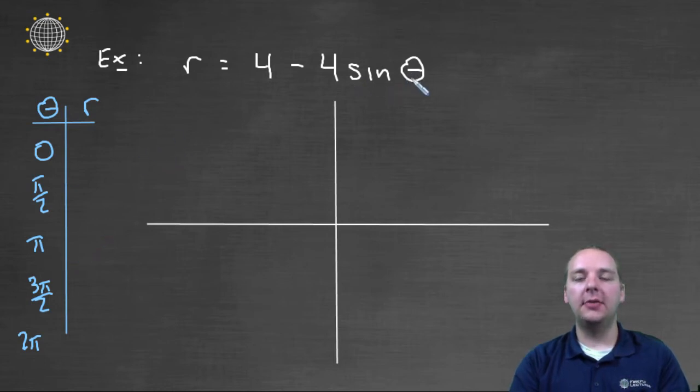So if theta was zero, then sine of zero is zero, and four minus zero is four. And let's go ahead and finish up the table, and then we'll talk about how to graph it.